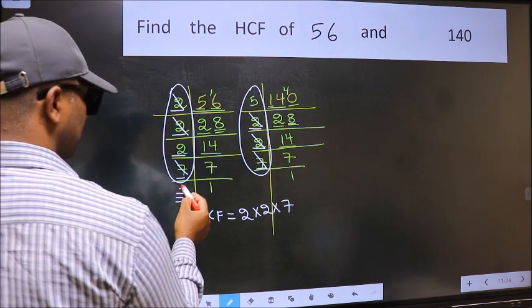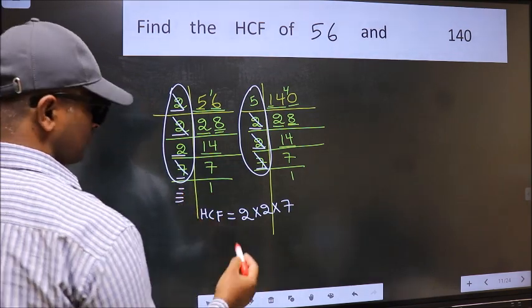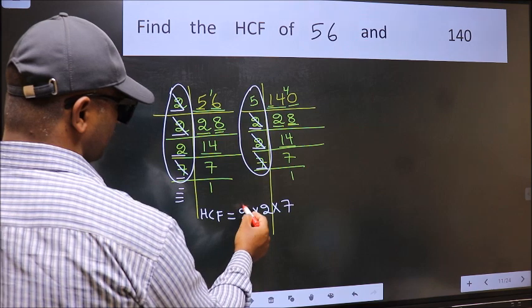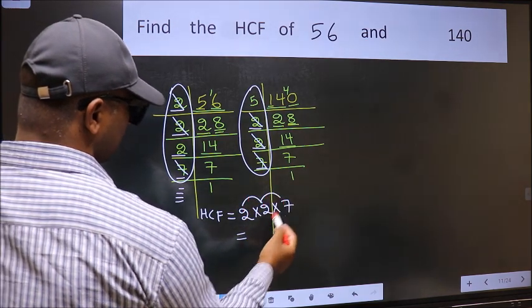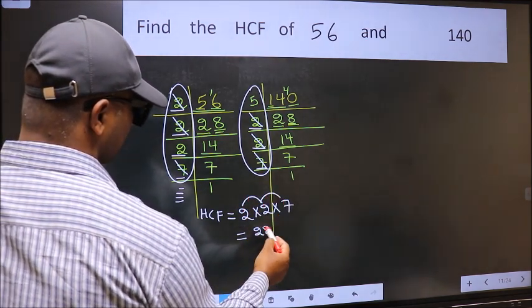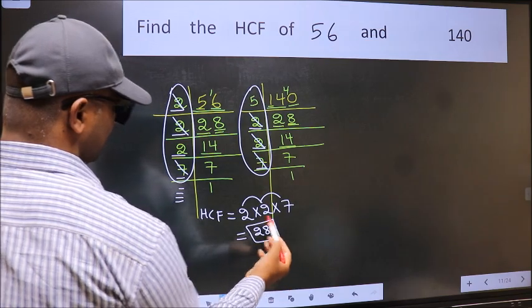No more numbers have been left out. So our HCF is 2 into 2, which is 4, into 7, which gives 28 as our HCF.